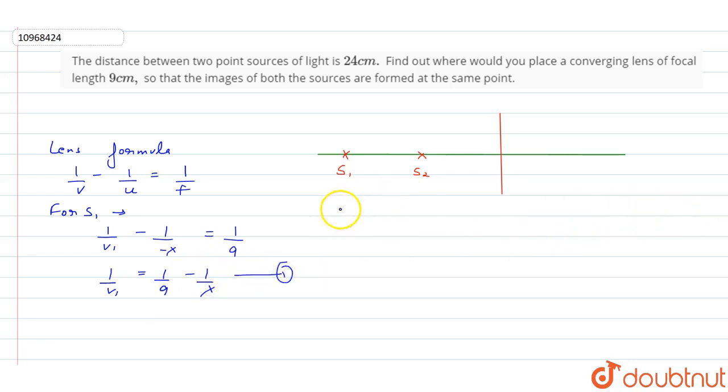Now we can write equation 2 for S2. 1 by v minus 1 by u is equal to 1 by f, where u is minus of 24 minus x. This distance is equal to 24 minus x. This is equal to 1 by 9. This will be v2.